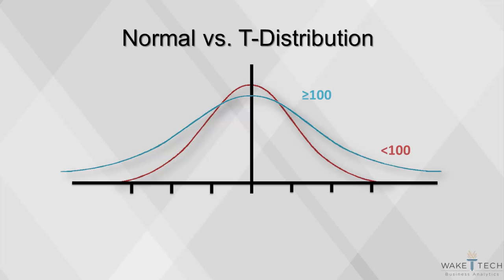The t-distribution is very similar to the standard normal distribution. It also has a bell curve, but the standard deviations are computed from the sample data instead of the population.